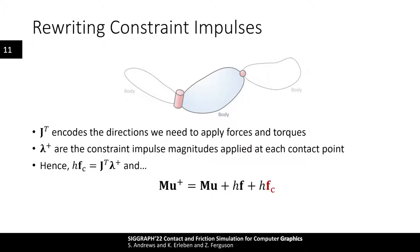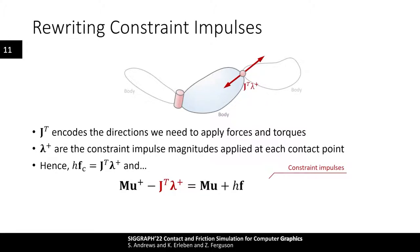J also encodes the directions in which we want to push to keep bodies from interpenetrating — the direction of our constraint forces FC. We can therefore decompose the constraint impulses as a product of the transposed Jacobian matrix, which gives the direction of the forces, and the impulse magnitude lambda. The lambda value is implicit — it is unknown. Even though the Jacobian is often computed at the start of the time step, for our purposes we consider it constant over the time step as well.